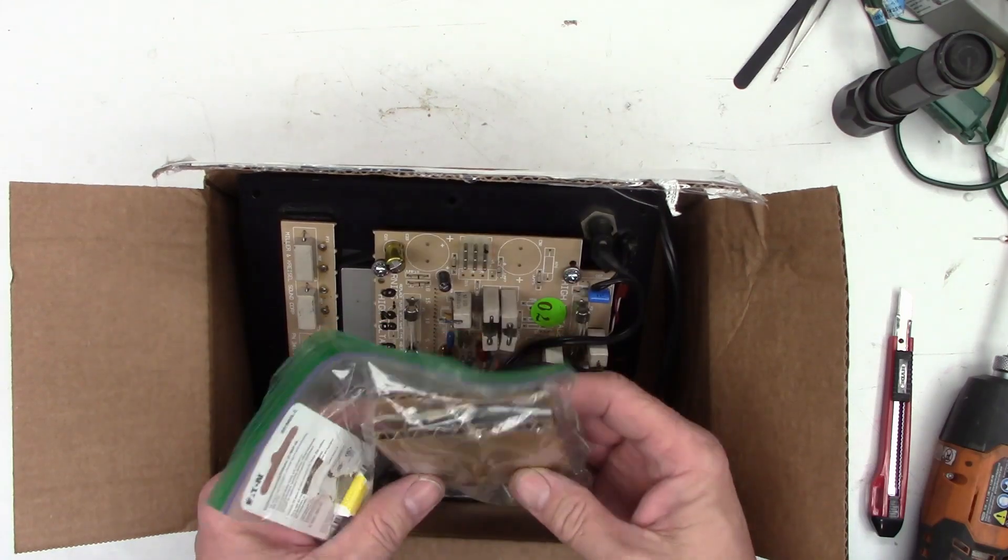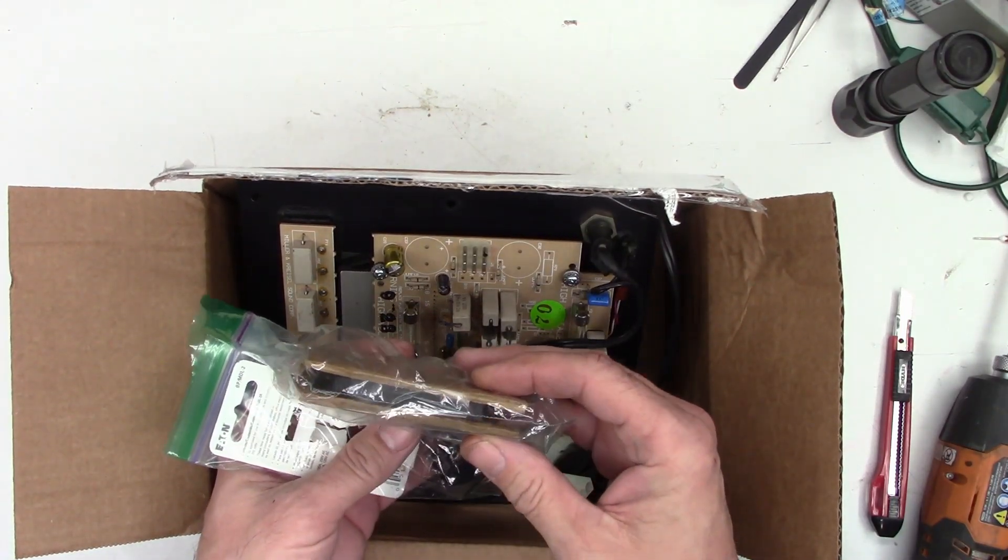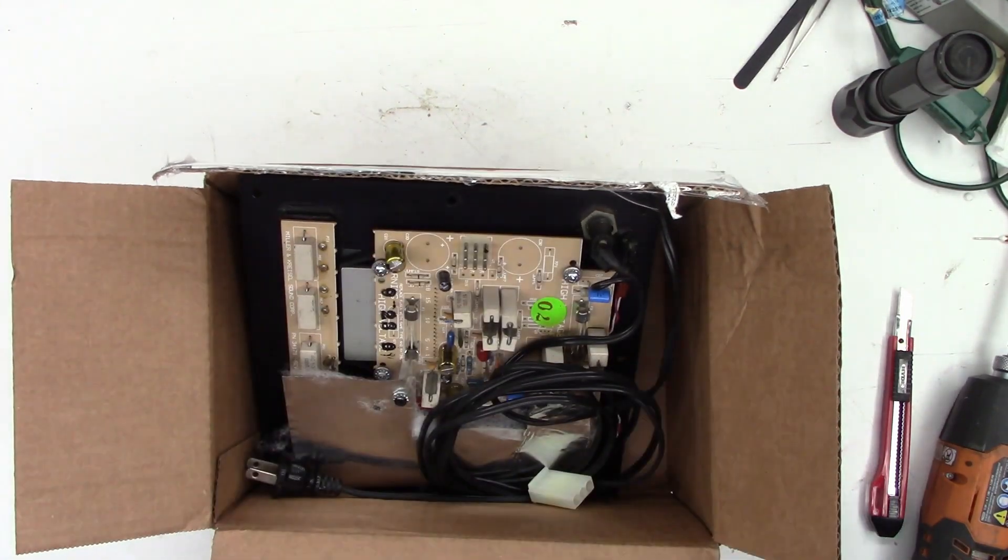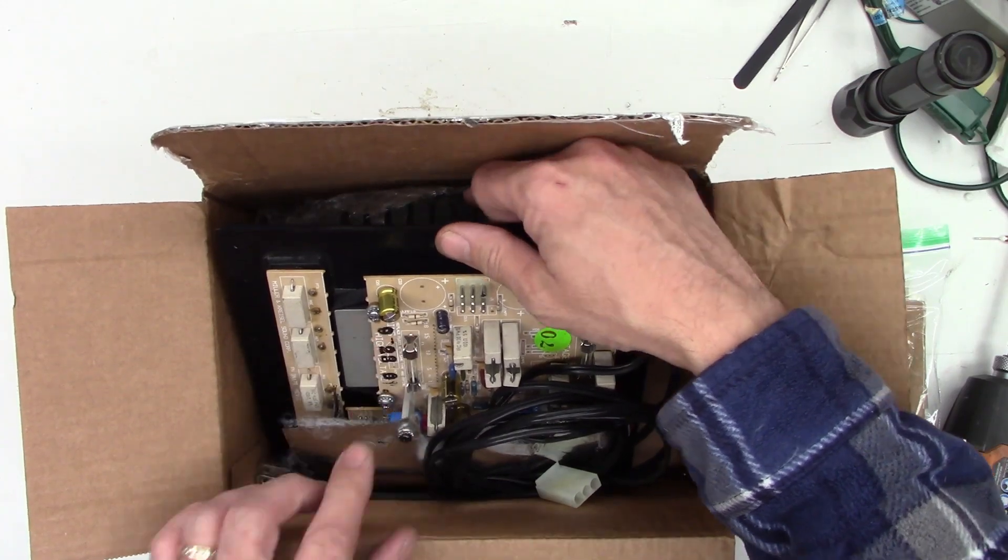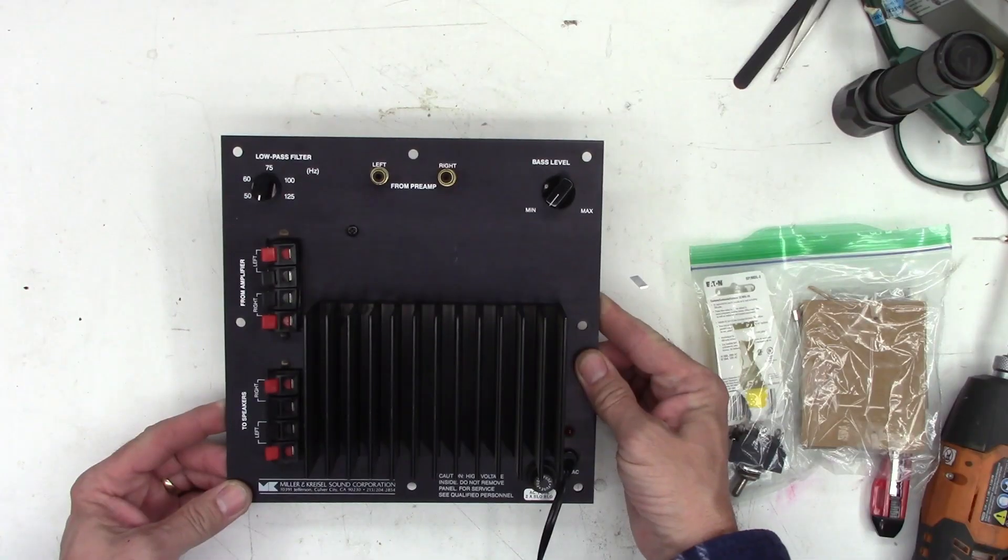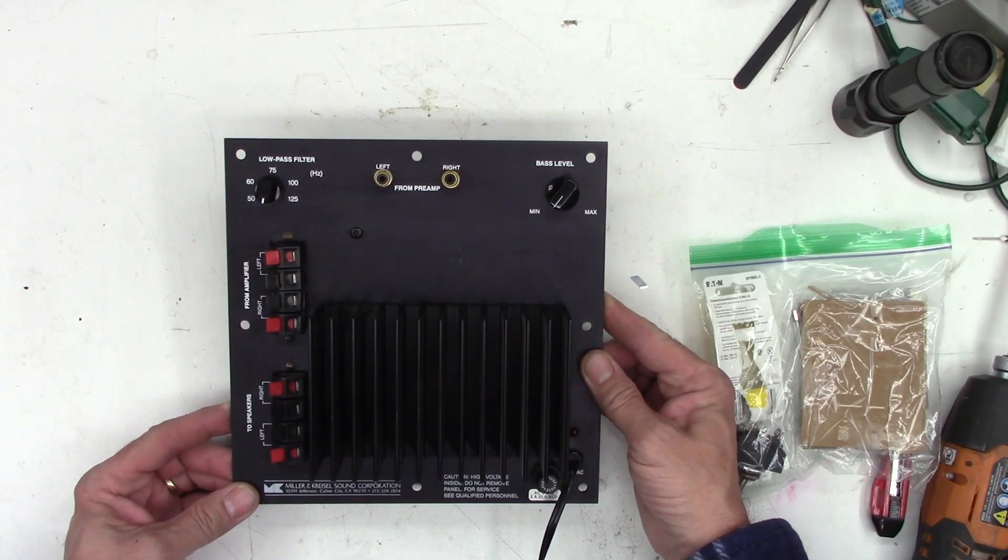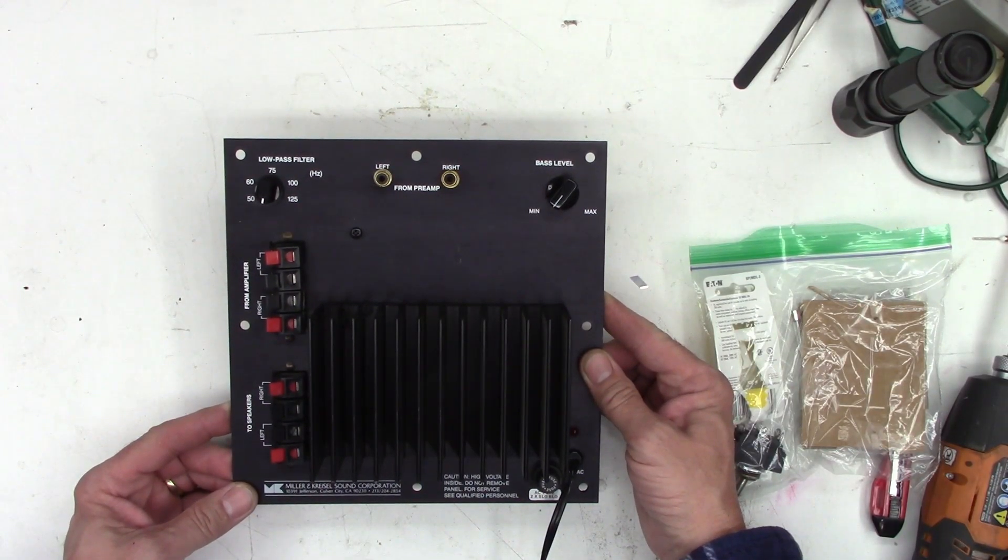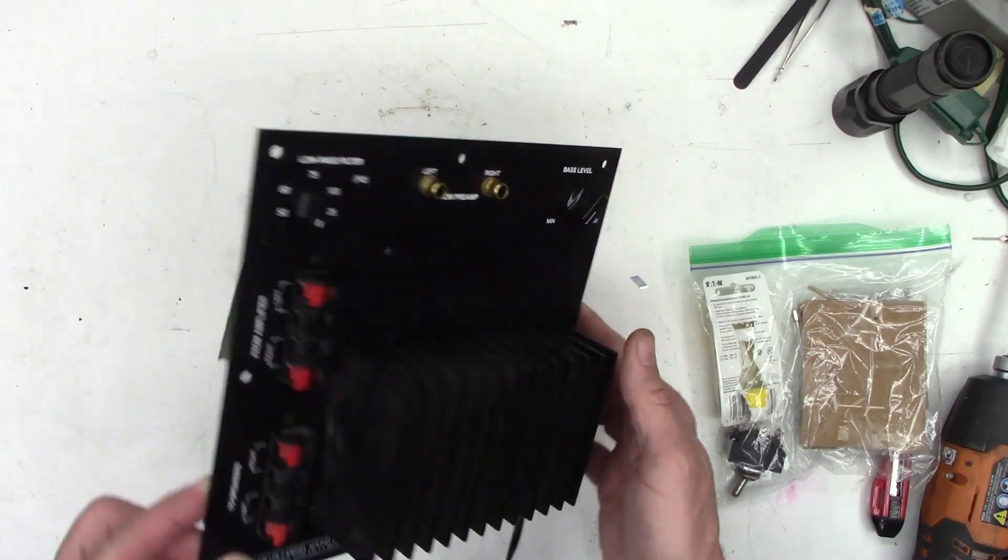We got some parts in here. A switch. Looks like maybe an STK power pack. Right off the bat, I see a bulged cap. Some of you might recognize this. It's the hot plate from a subwoofer. Another Miller and Kressel. I think this one is a MX-70 if I'm not mistaken.